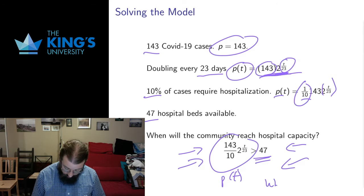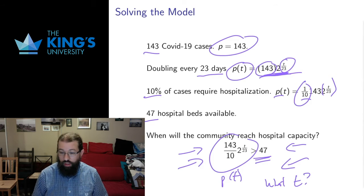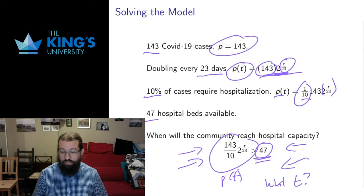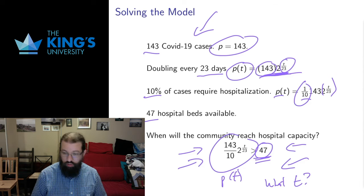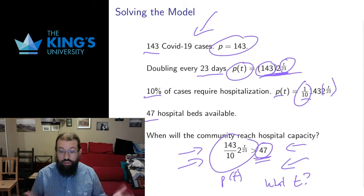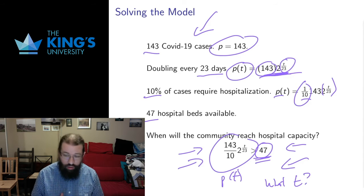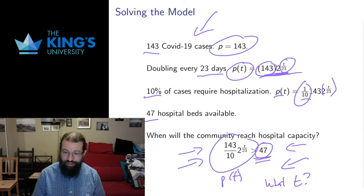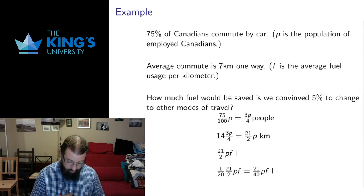So the question is: what T? How many days until I actually get past this 47-bed hospital capacity? I'm not going to solve that here. All I want to demonstrate is the way in which a reasonable — or I suppose unreasonable and terrible — but a real-world problem has a reasonable translation into a mathematical statement that we can actually get an answer about, and tell you exactly how many days you have until your hospital runs out of capacity. Let me do a couple more examples, perhaps not quite as on point with current affairs, but to give you another demonstration.